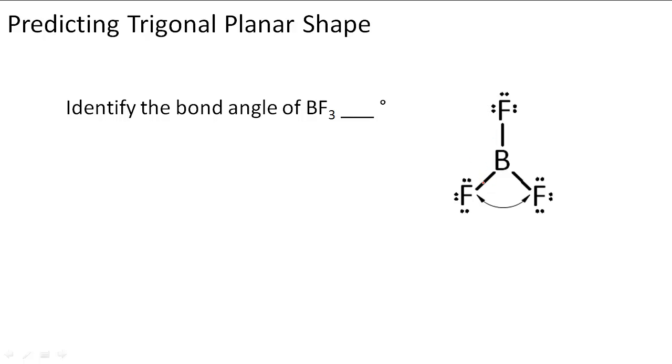So we know that this has 3 bonds and 0 lone pairs. So 3 bonds, 1, 2, and 3, and there's no lone pairs around B.